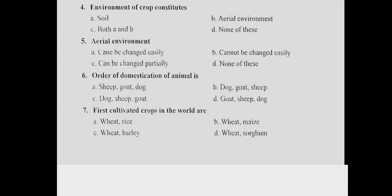Question 6: The order of domestication of animals. Answer is C — dog, sheep, goat. Question 7: The first cultivated crops in the world. Answer is C — wheat and barley.